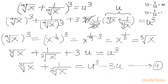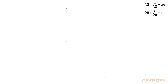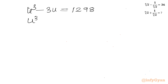Now equation 3 was: cube root of x plus 1 over cube root of x equal to 1298. Since the left hand sides of equation 3 and equation 4 are the same, I will equate the right hand sides. So u cube minus 3u equal to 1298. Taking all terms to one side: u cube minus 3u minus 1298 equal to 0.